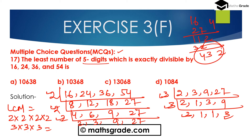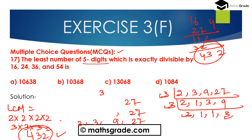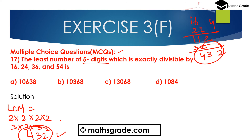The LCM of 16, 24, 36 and 54 is 432. Now the least number of 5 digits is 10,000. We have to divide 10,000 by 432 to find the remainder and then determine the least 5-digit number exactly divisible by 432.